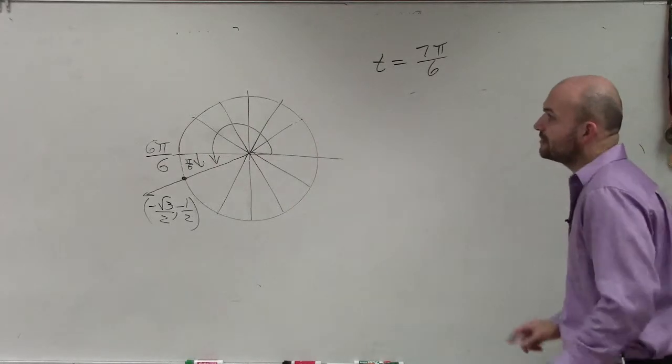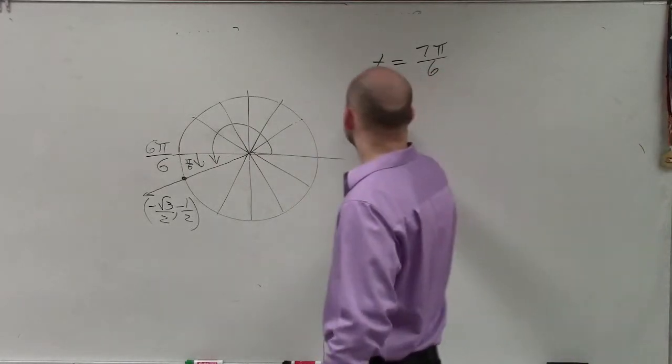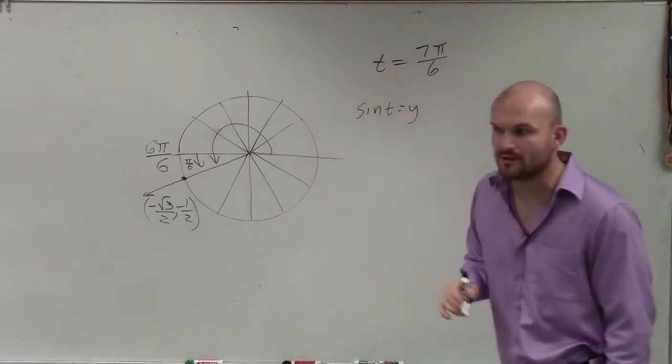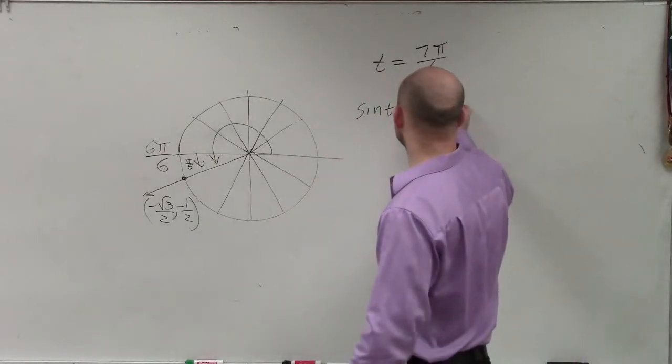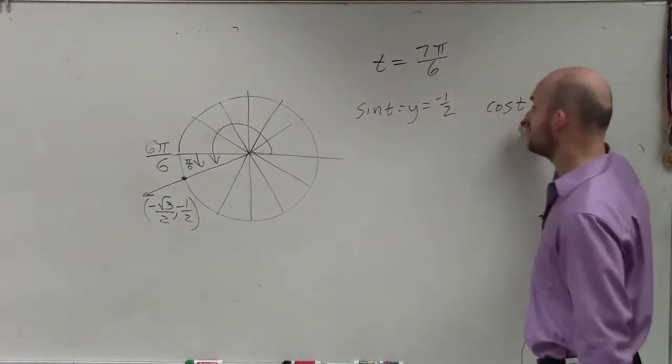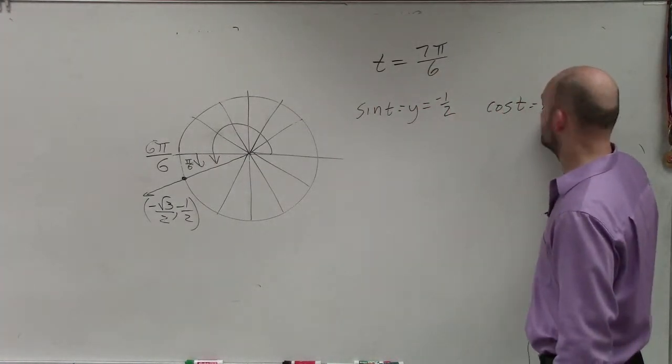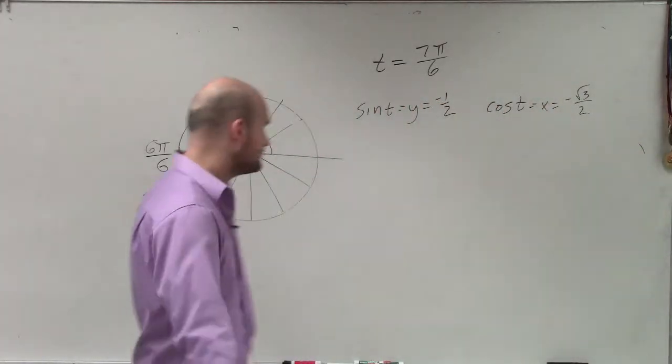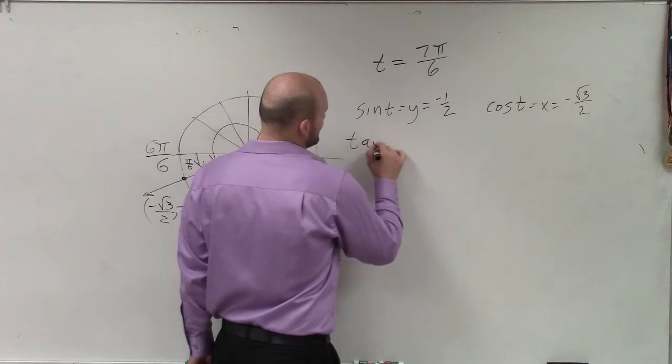So remember, the sine of t is represented by the y coordinate. Well, this one's pretty basic. That's negative 1 half. The cosine of t is represented by the x coordinate, which is negative square root of 3 over 2. Those are the easy ones, right?